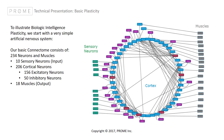To illustrate plasticity in biologic intelligence, we created a very small artificial connectome. It has only 10 sensory neurons, 206 cortical neurons — excitatory and inhibitory — and 18 muscles. Motor neurons are part of the cortex and they stimulate the muscles.